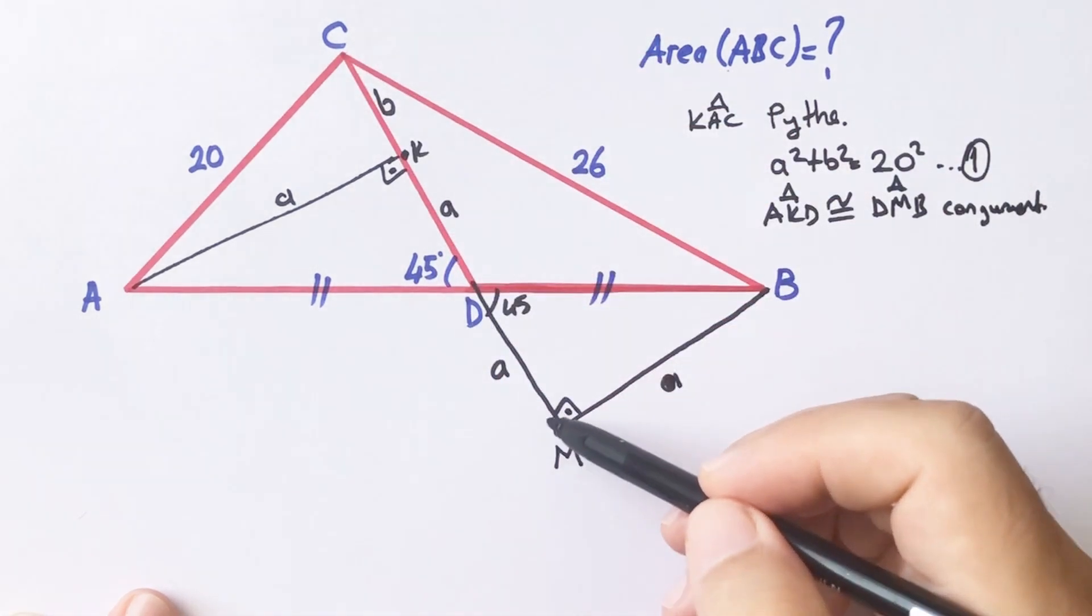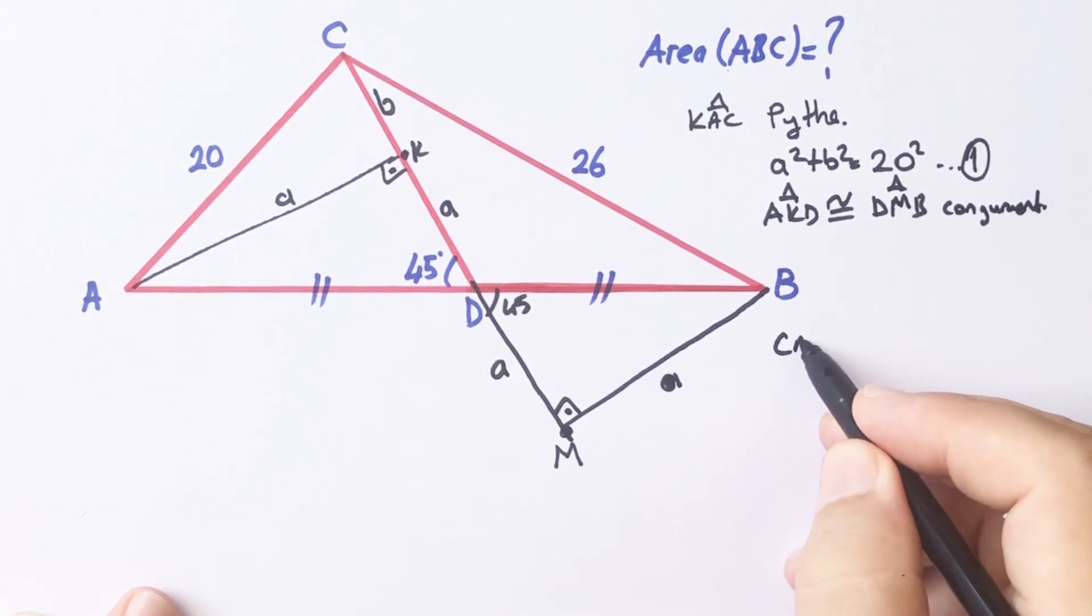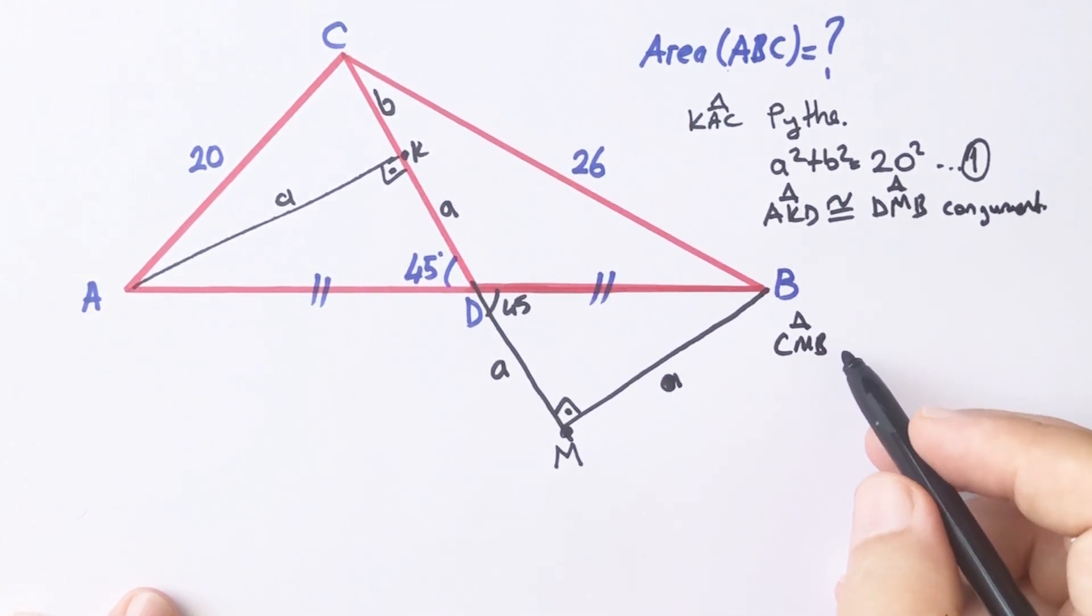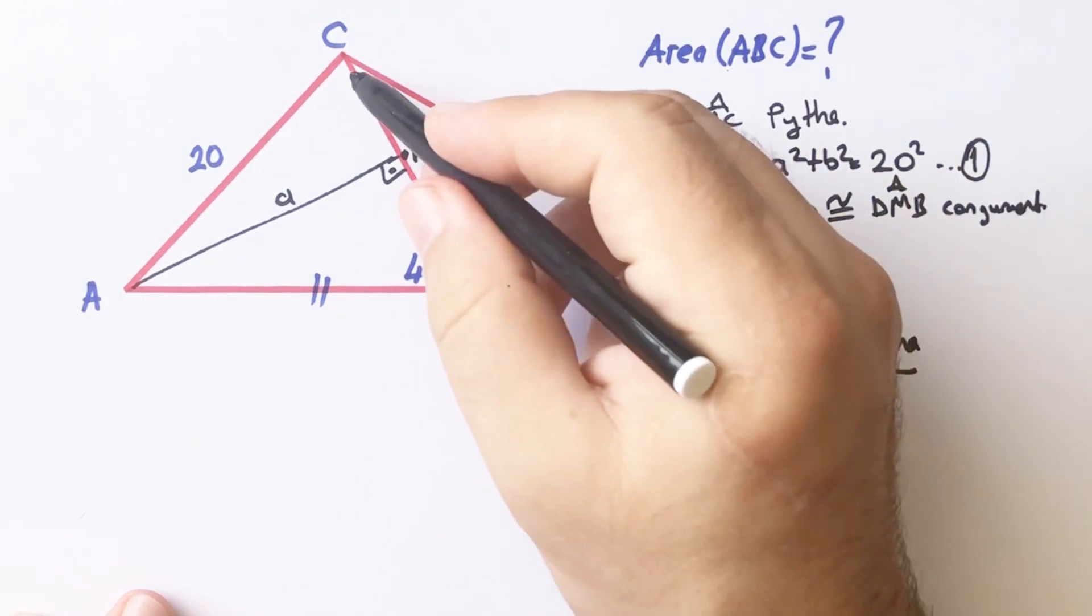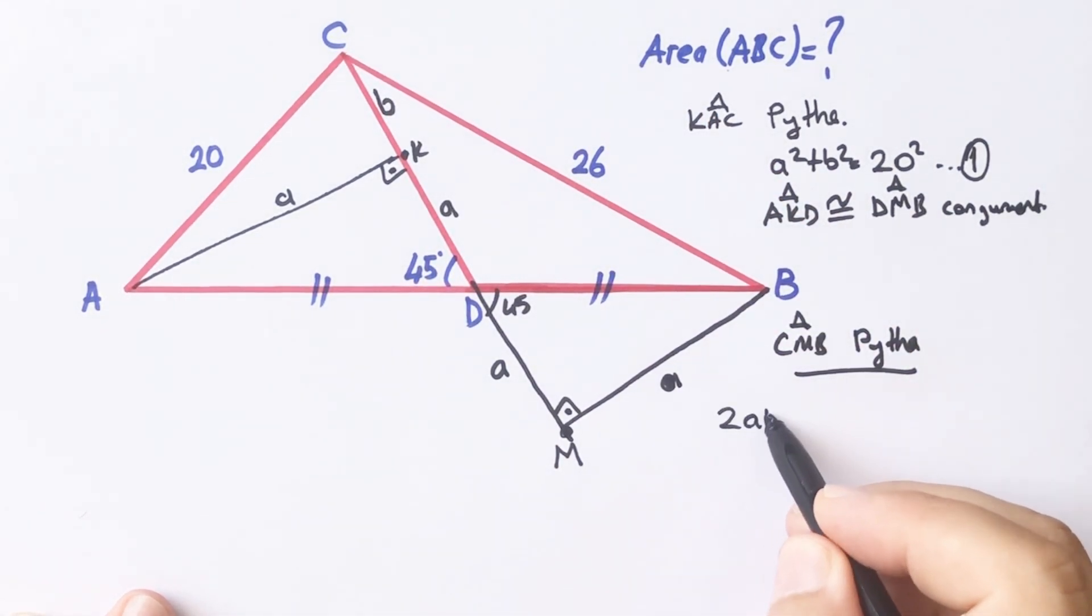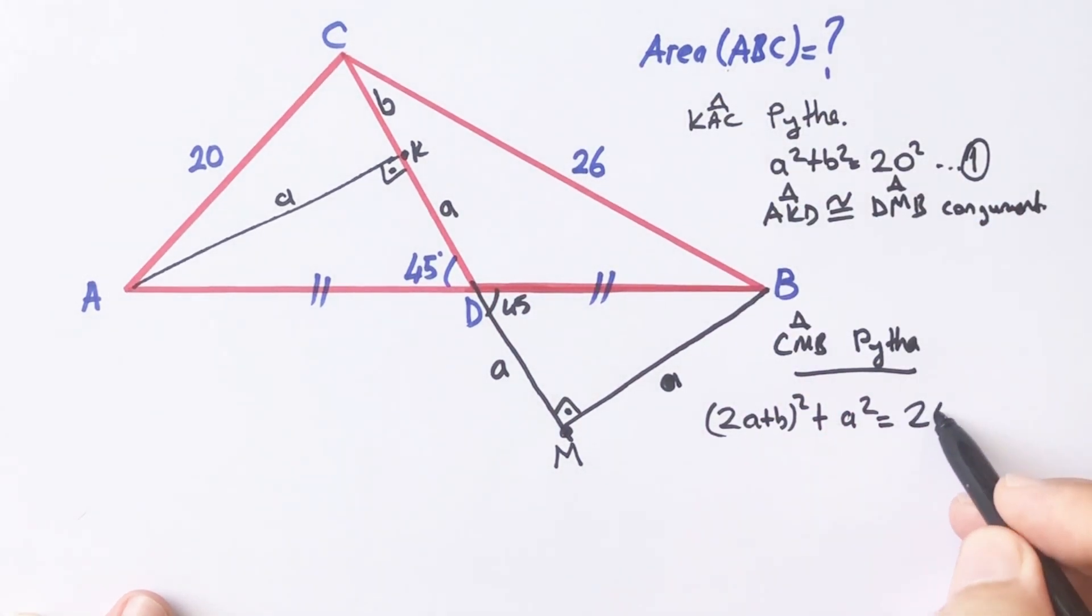And then, for this triangle, if we apply Pythagorean theorem, 2a plus b whole squared plus a squared equals 26 squared. This is the second equation.